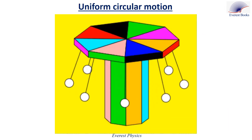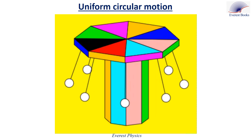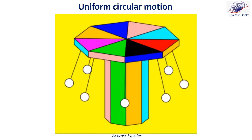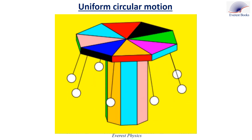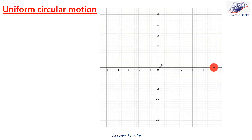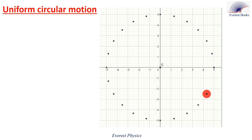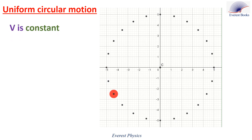Observe this animation. The motion of each ball is uniform circular. In the next slides, we will explain the uniform circular motion. In this animation, the ball moves on a circular path, and since the ball has a constant speed, then the motion of the ball is said to be uniform circular motion.